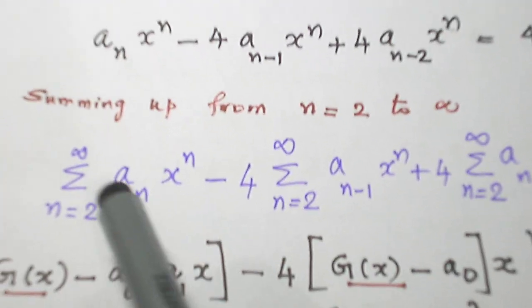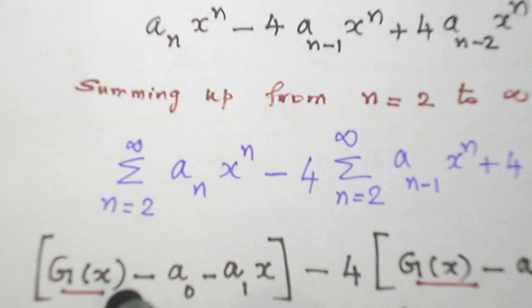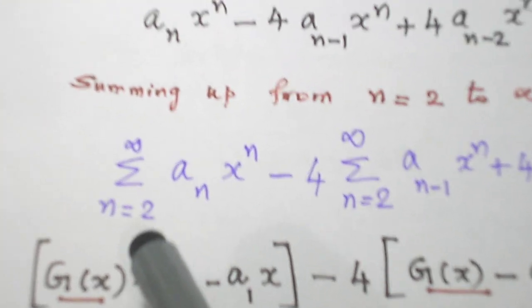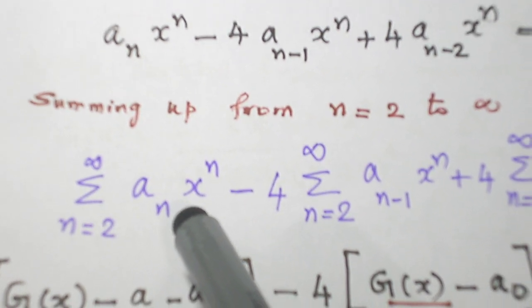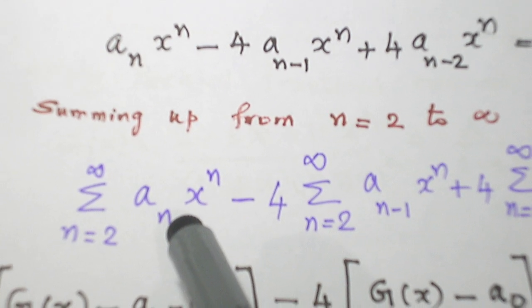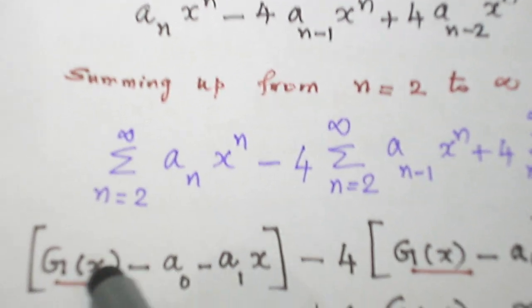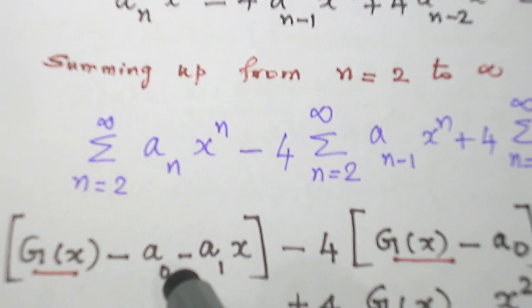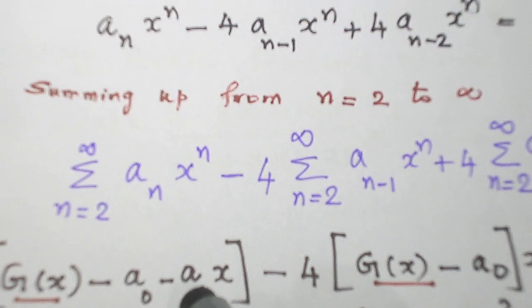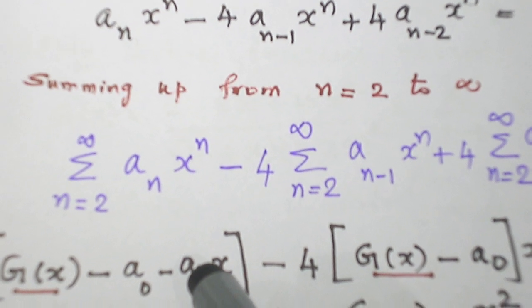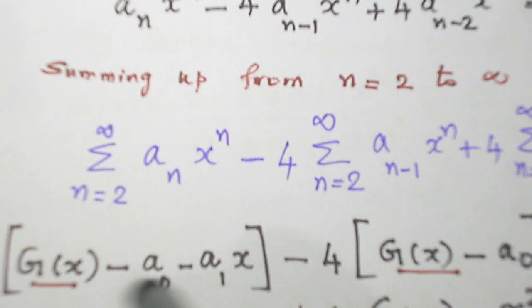And when we take how this summation becomes generating function, let me explain. So since n is starting from 2 and here n minus 0 is there, difference between 2 and 0 is 2. So from the generating function, we have to subtract 2 terms. For better clarity, you refer my tutorial video on generating function tips. You can easily understand this step.